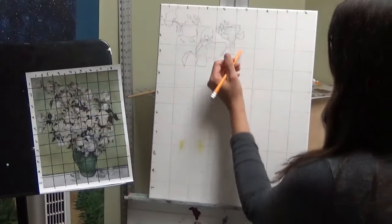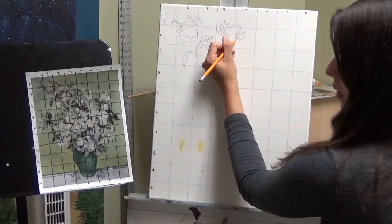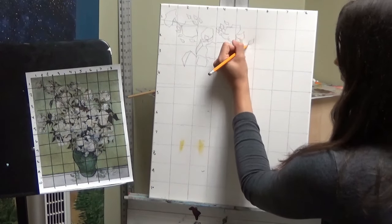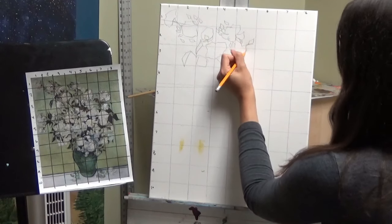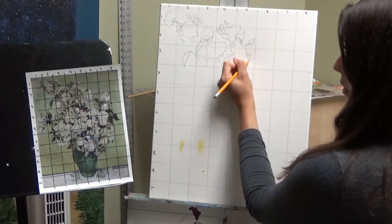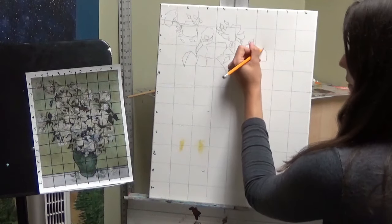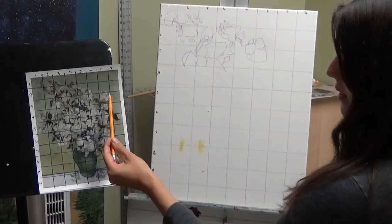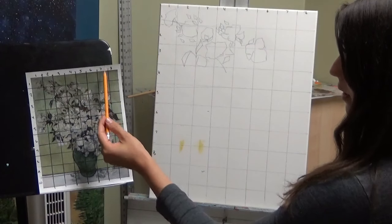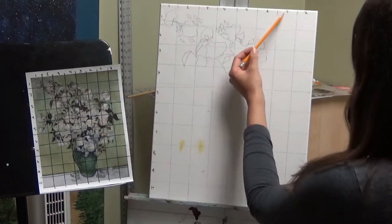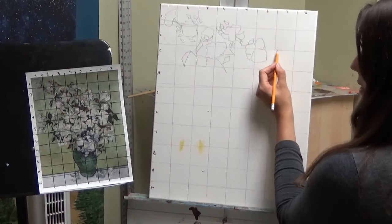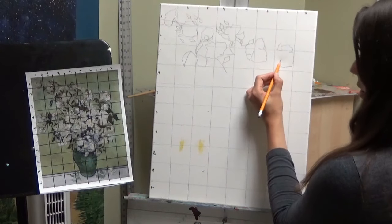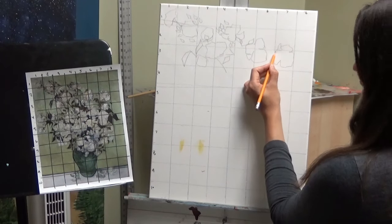And there's also some small budding flowers. In box two, five, we've got this petal. It's got some small budding flowers and another budding flower there. And the top of a flower that is in four different boxes. So this next flower is majority in box seven to three. It kind of peaks up into seven, two a little bit.